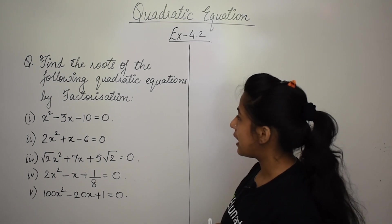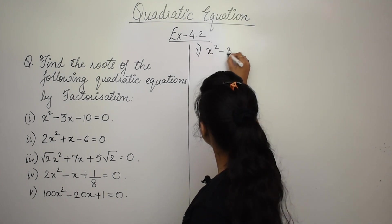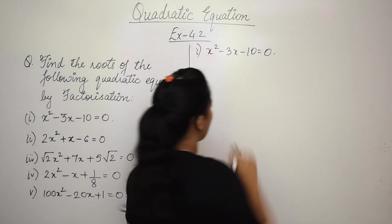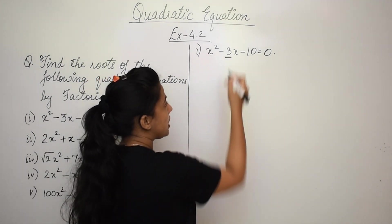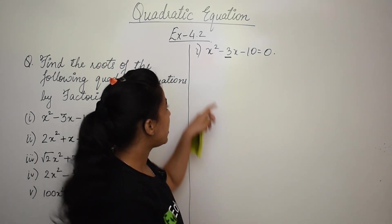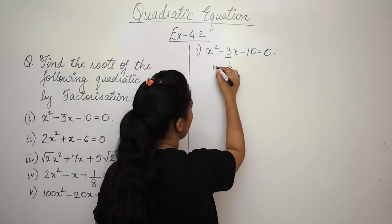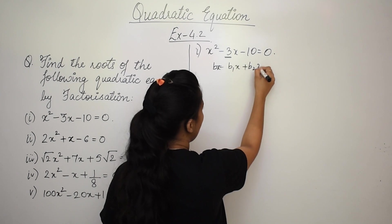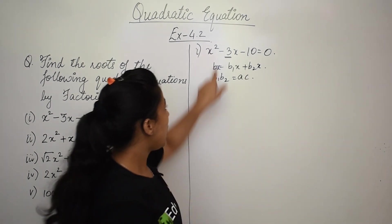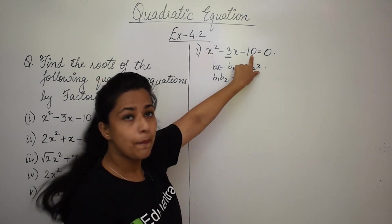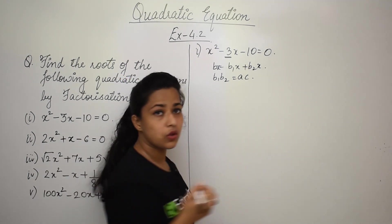Find the roots of the following quadratic equations by factorization. The first equation is x² - 3x - 10 = 0. We have to find the factors. The product of factors b1 and b2 should equal a×c, which is 1×(-10) = -10. The factors of 10 are 5 and 2.